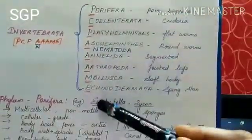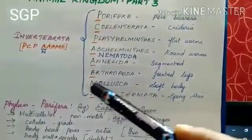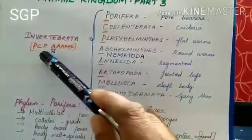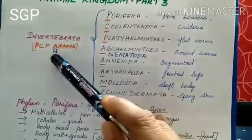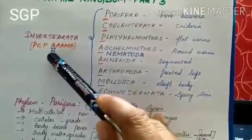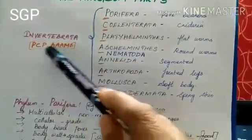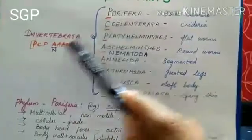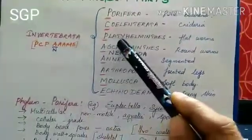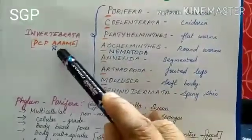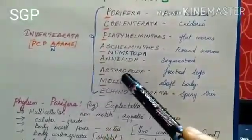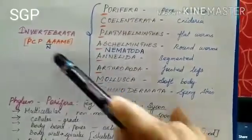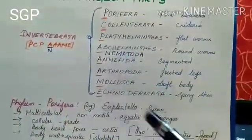To remember all eight phylums easily, use the mnemonic PCP double-A ME, or 'PCP NAME' where A is doubled. P stands for Porifera, C for Coelenterata, and another P for Platyhelminthes. The first A is for Aschelminthes, another A for Annelida, third A for Arthropoda, M for Mollusca, and E for Echinodermata. In this way you can simply remember all eight different phylums.